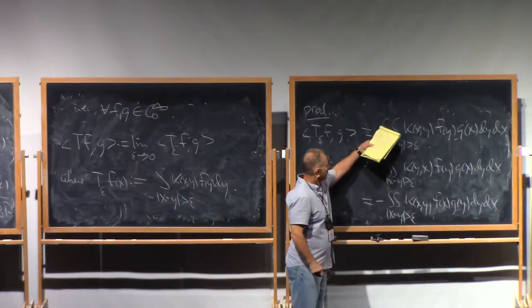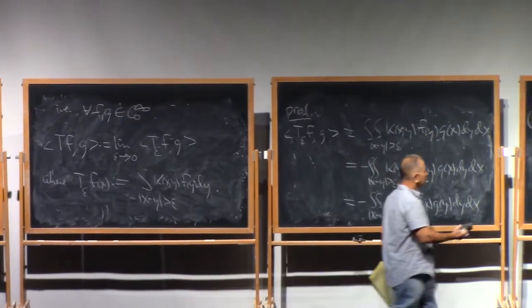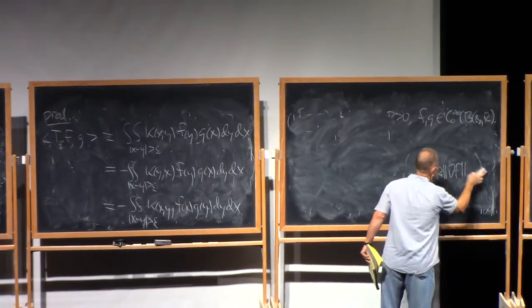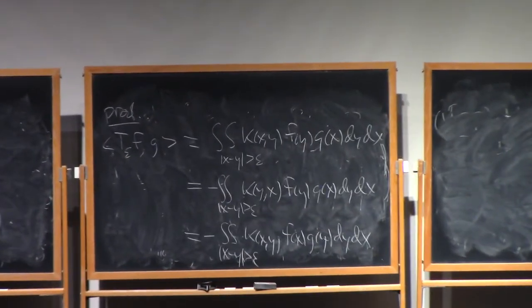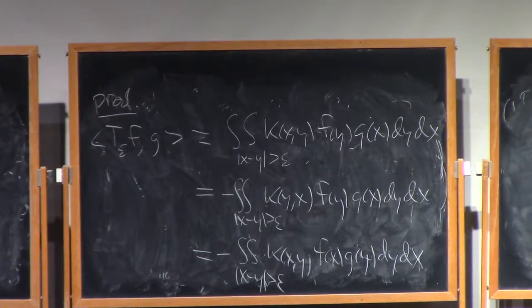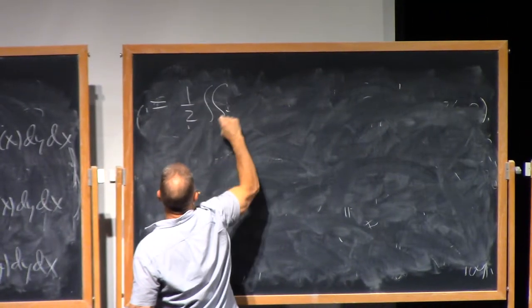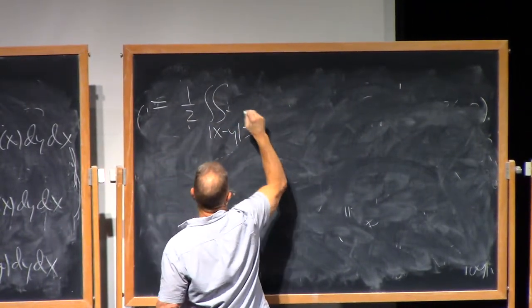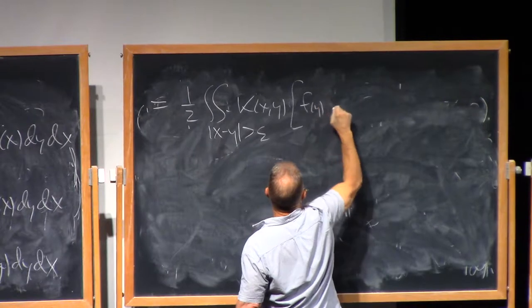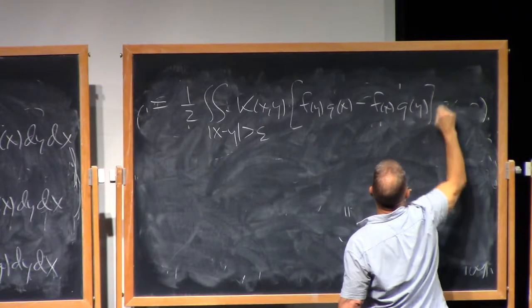but now we have f of x and g of y. And now this is equal to this, which means it's equal to the average of the two.